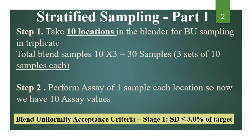Stratified sampling, step by step — we will now study from blend uniformity testing. Step 1: take samples from 10 locations in the blender for BU sampling in triplicate. This is a very common practice in pharmaceutical industries. For BU sampling, we have to decide 10 locations and collect samples in triplicate — that is 10 multiplied by 3, giving 30 samples, which is 3 sets of 10 samples each.